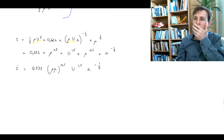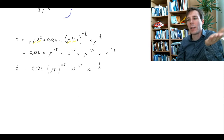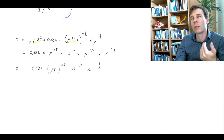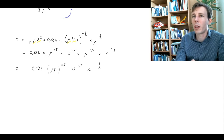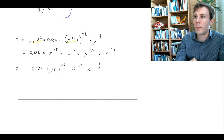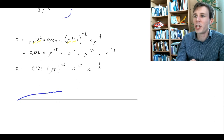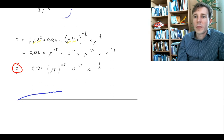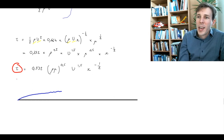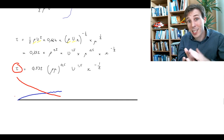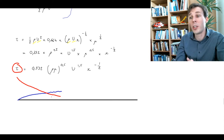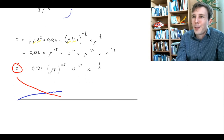Because tau varies as x to the power minus 0.5, if we draw the laminar boundary layer starting at zero and growing until transition, we see that tau is very high when x is zero and decreases progressively as x increases. You have the maximum velocity gradient — and thus maximum shear — right at the leading edge, and then the shear decreases as you move downstream.